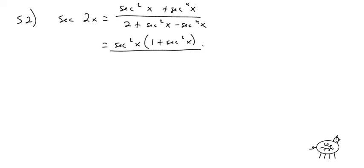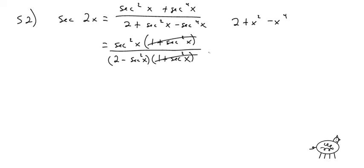On the bottom, that's really a trinomial and you can factor it. I can look at it as 2 plus secant squared of x minus secant to the fourth. Factoring gives 2 minus secant squared of x and 1 plus secant squared of x. That factor cancels, and I just have secant squared of x over 2 minus secant squared of x.